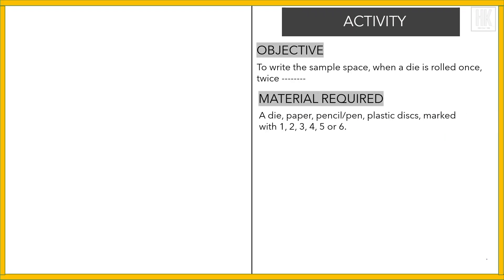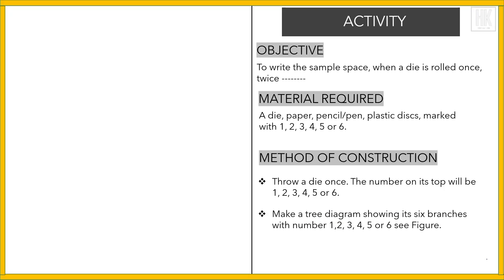Material required is a die, paper, pencil, pen, plastic discs marked with 1, 2, 3, 4, 5, or 6. Method of construction: throw a die once and the number on its top will be 1, 2, 3, 4, 5, or 6. Make a tree diagram showing its six branches with these numbers.